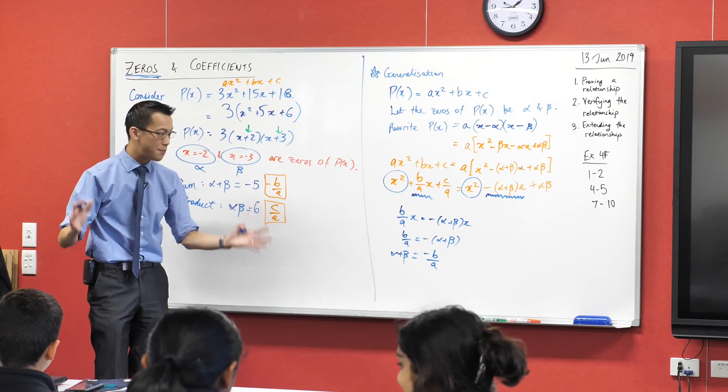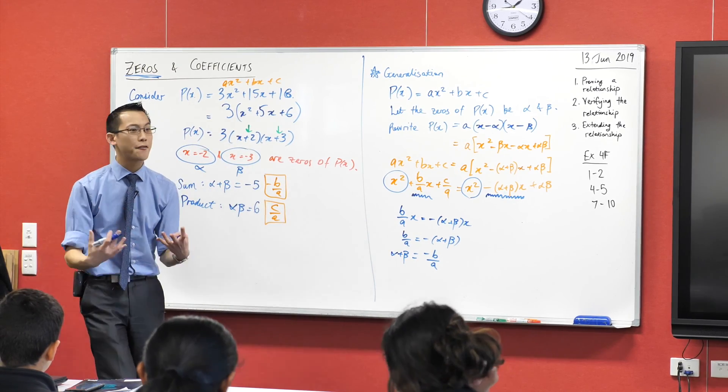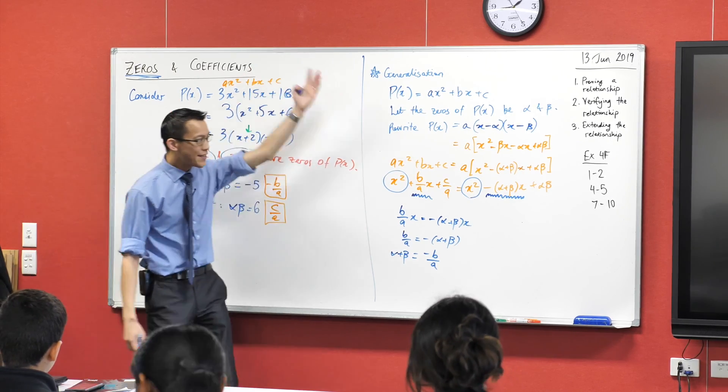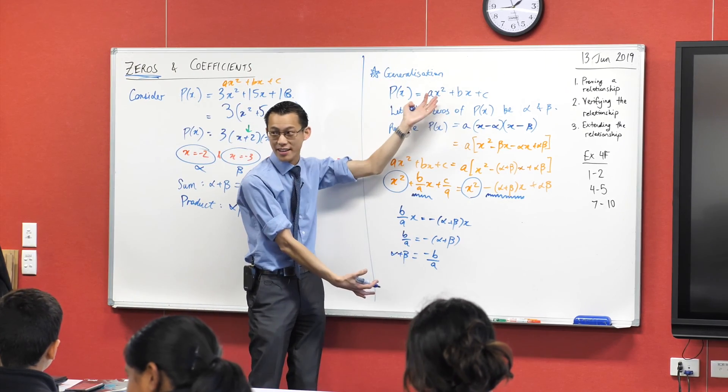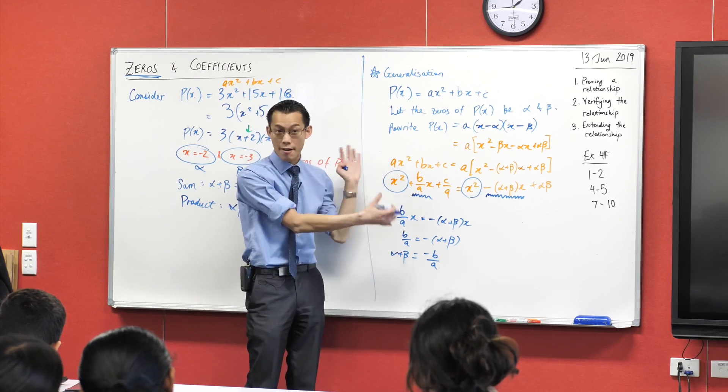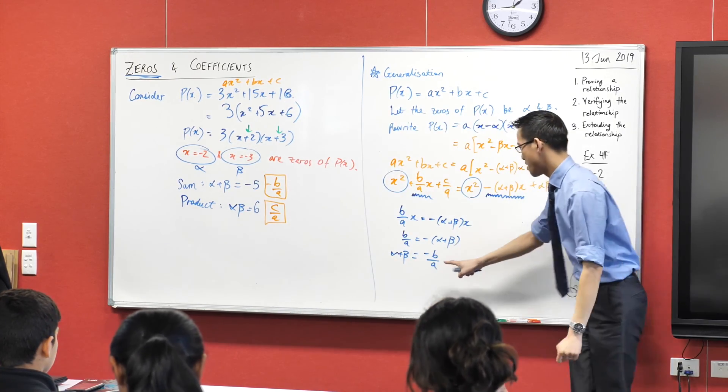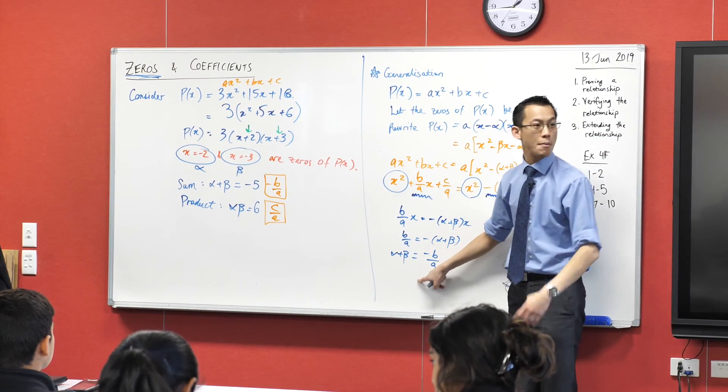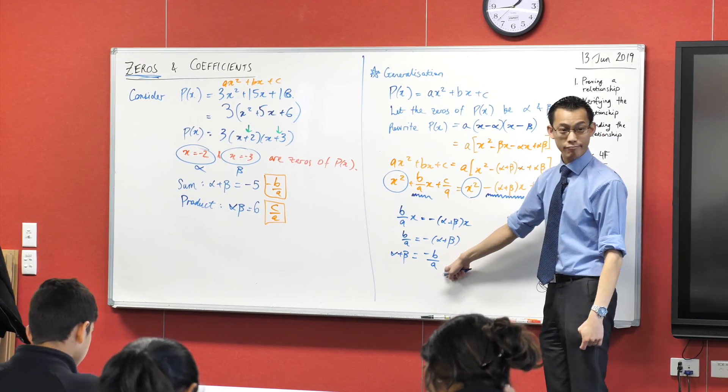Whatever a and b happen to be, whatever alpha and beta happen to be, not just negative two and negative three, for any values, like I don't even have any numbers here. No numerical numbers anyway, I have pronumerals, right? Okay, so this is a result called the sum of roots. It's what happens when you add up the roots, no matter what they are, you get this guy.